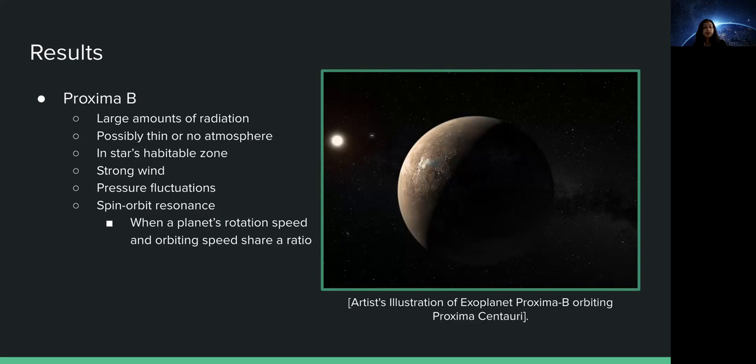If a thin atmosphere exists, there could be sufficient pressure to allow for the existence of liquid water on the surface, since the exoplanet is in its star's habitable zone. If surface water does or did at some point in time exist on the planet, then any existing atmosphere may also consist of oxygen or carbon dioxide.